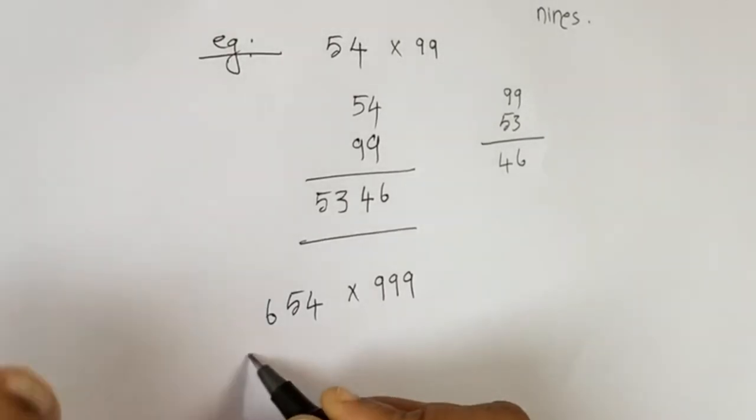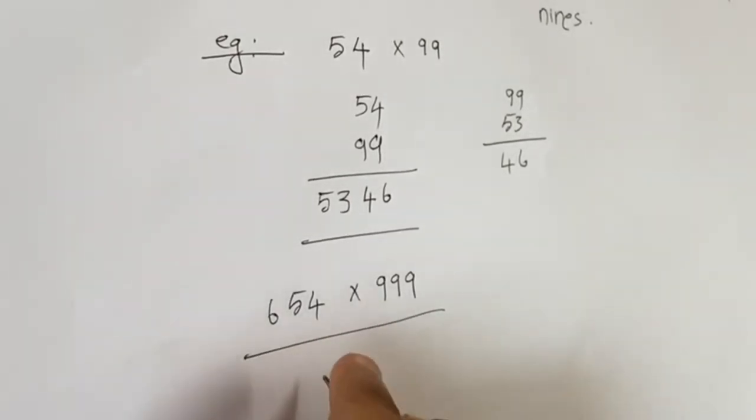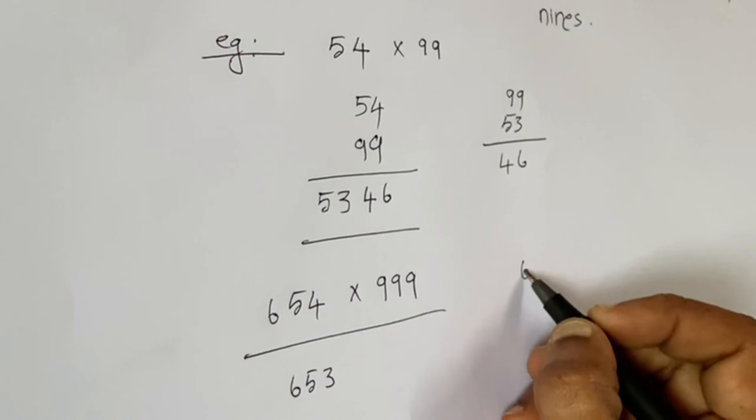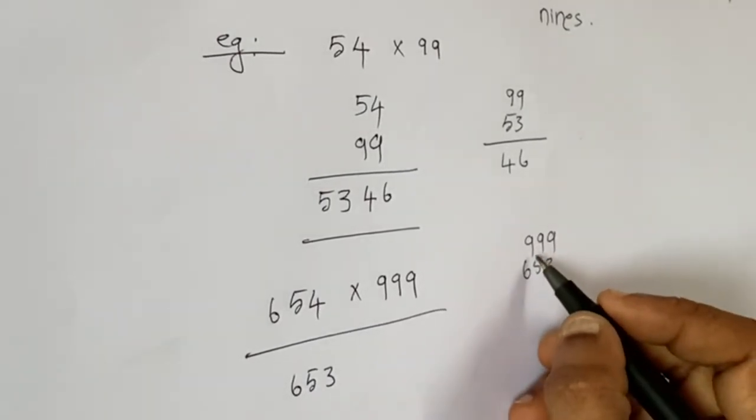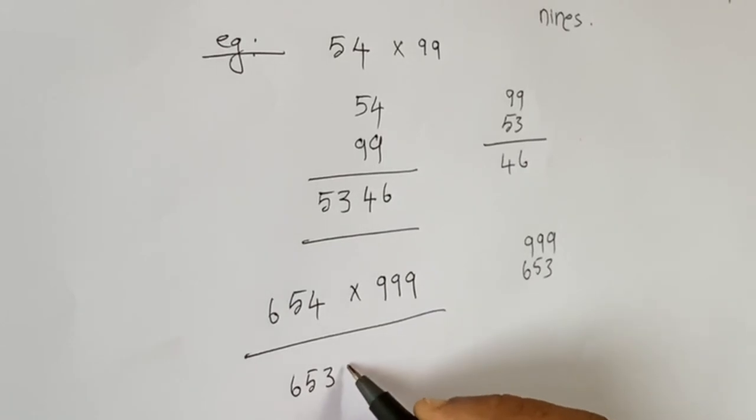The same process. We have to subtract one number from this number, so 654 becomes 653. And again we have to subtract from the 9s. So 9 minus 6 is 3, 9 minus 5 is 4, 9 minus 3 is 6.